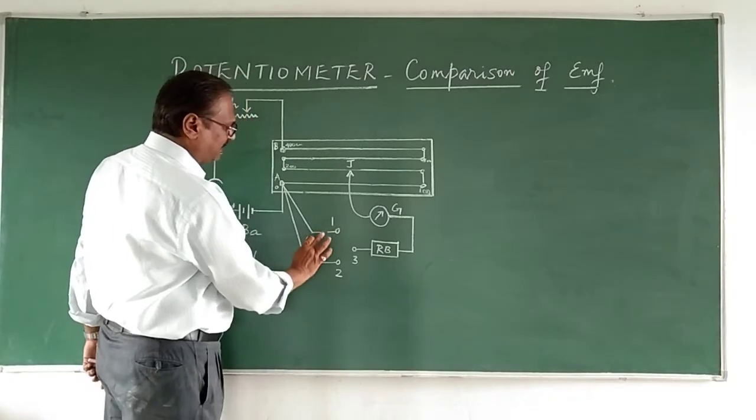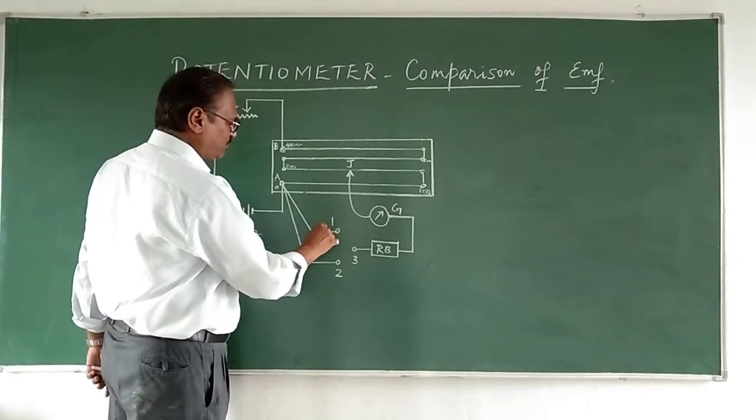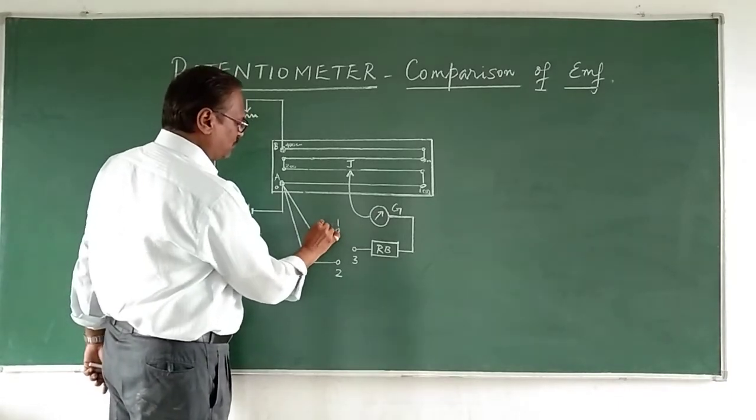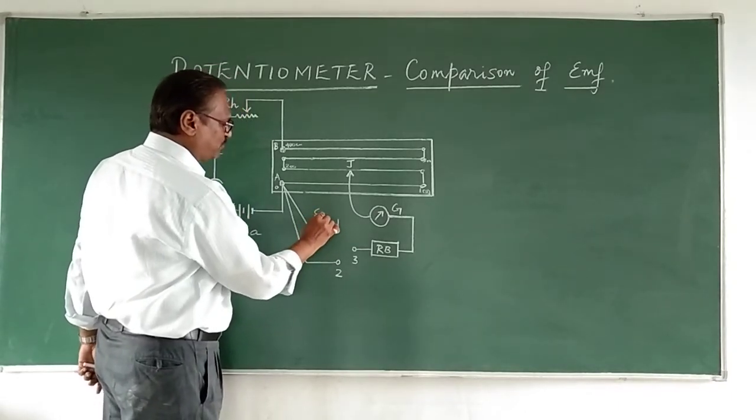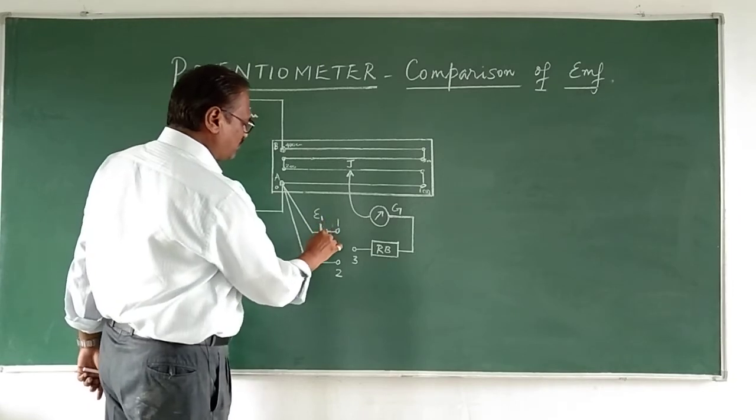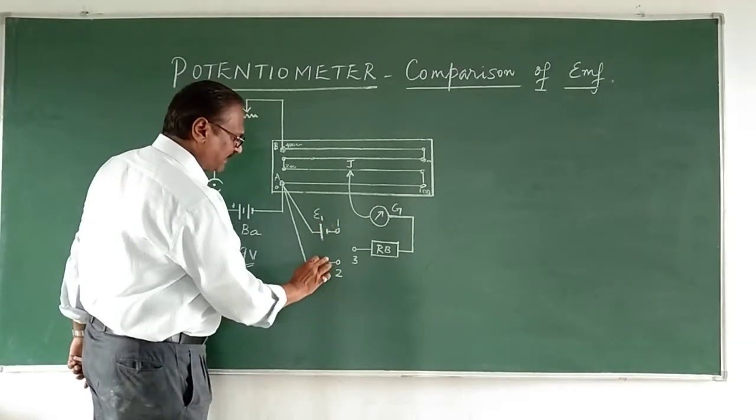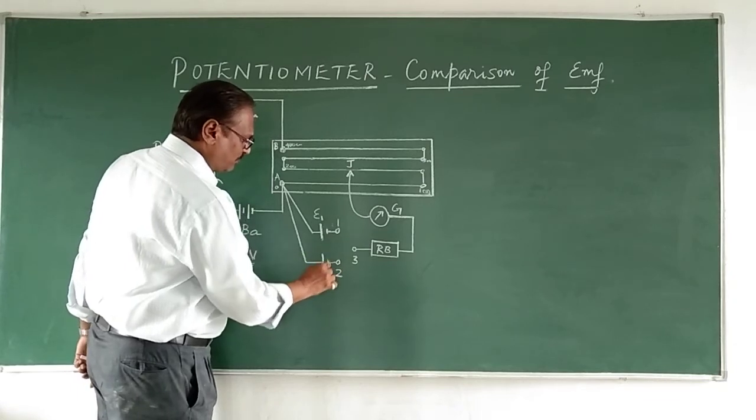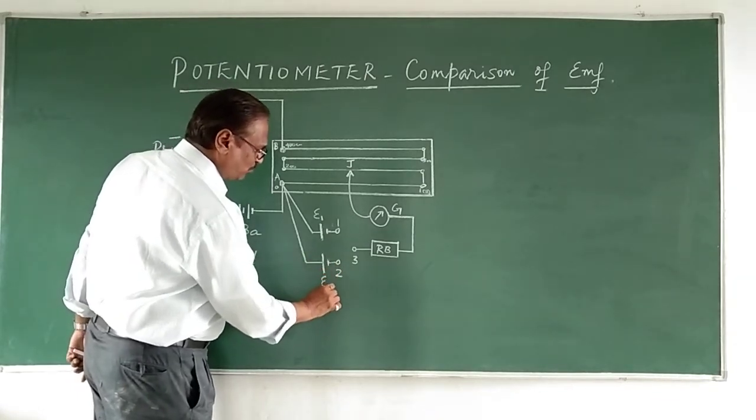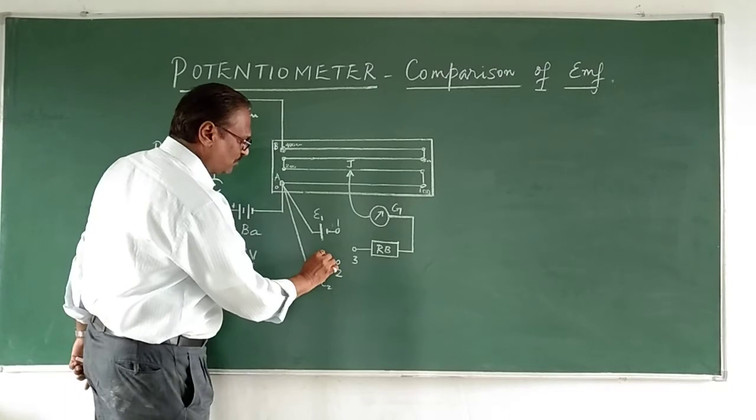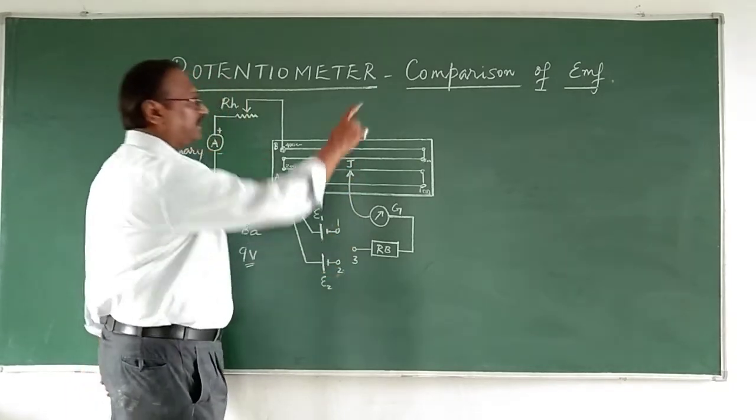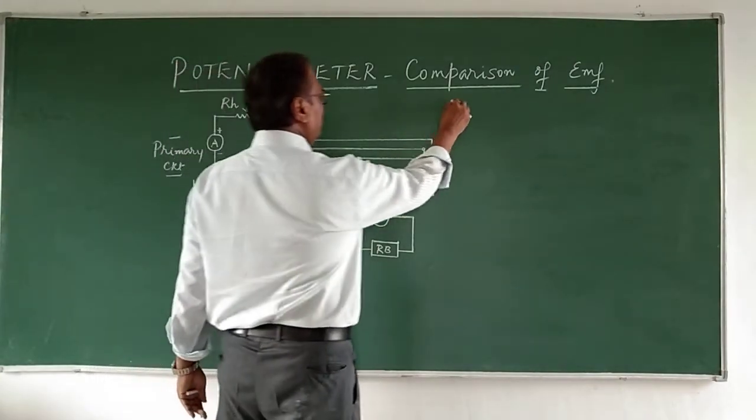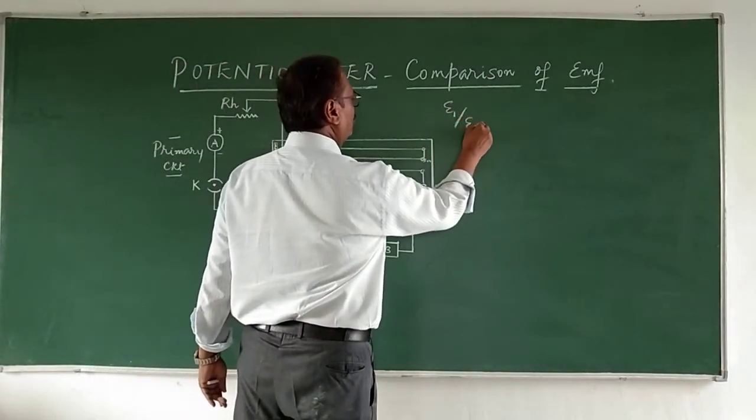From the same point A, I connect two cells whose EMF I have to calculate. So two cells: this is epsilon 1, that is one cell, and I am going to connect another cell and that is epsilon 2. These are the two cells whose EMF I am going to compare. Basically epsilon 1 upon epsilon 2 we have to find out.